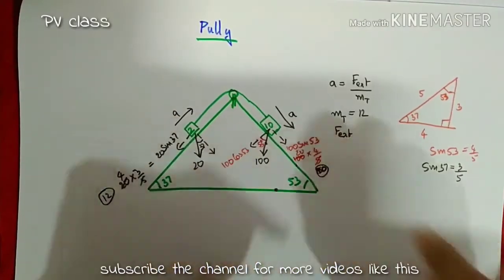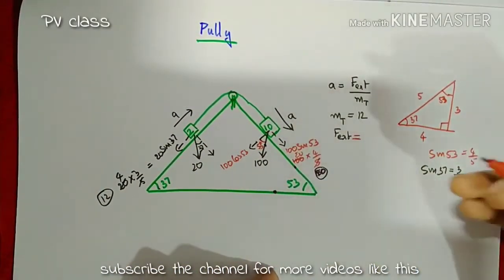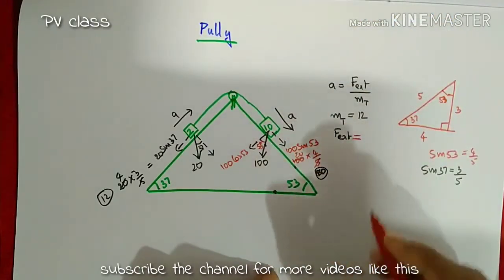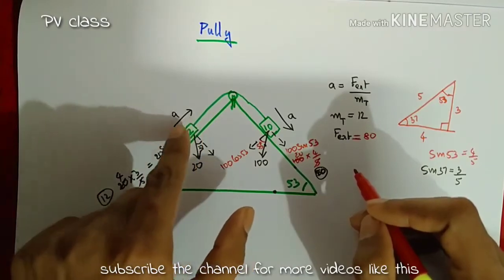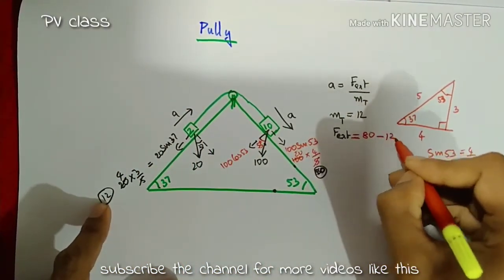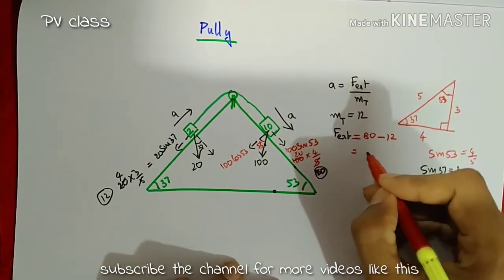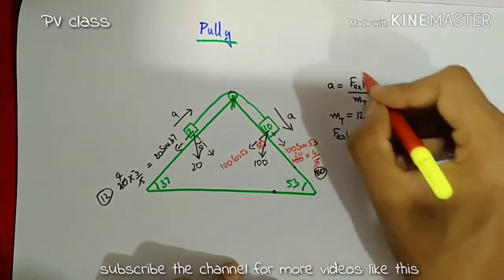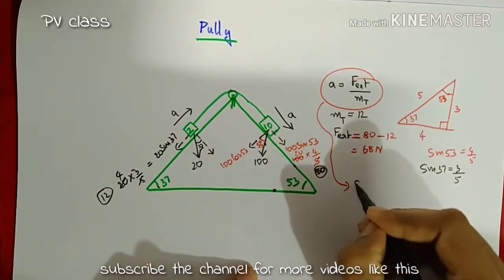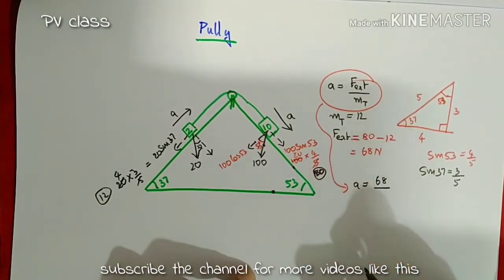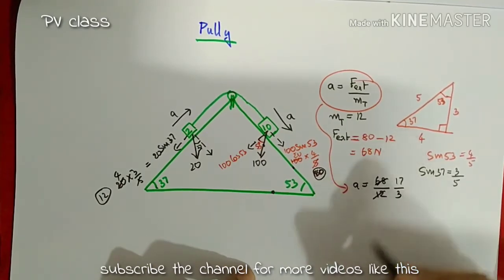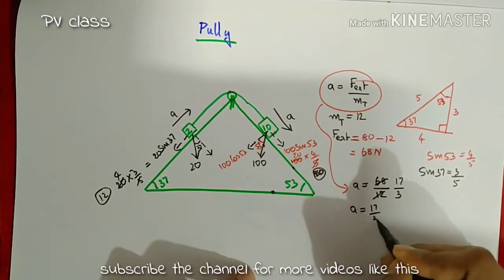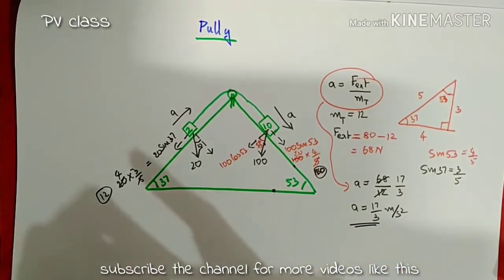The net external force is found by taking the force in the direction of acceleration as positive (80 N) and the opposing force as negative (12 N): net force equals 80 minus 12, which is 68 Newton. Substituting into the formula, net acceleration equals 68 divided by 12, which simplifies to 17 by 3 meters per second squared.